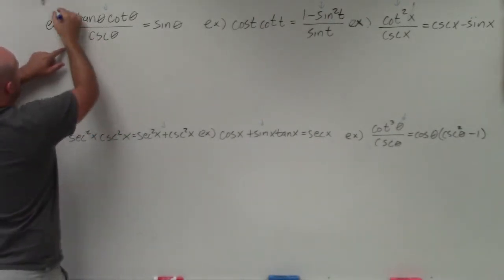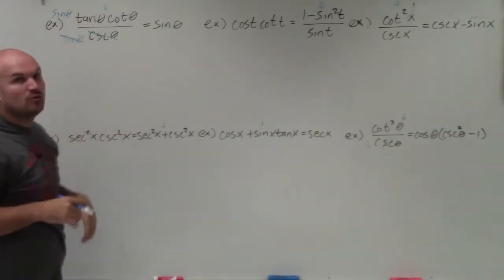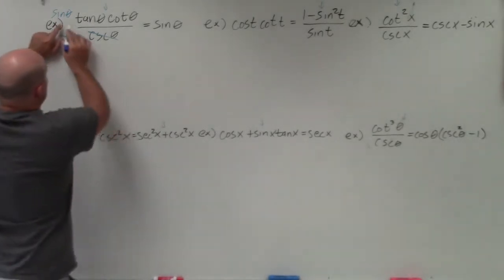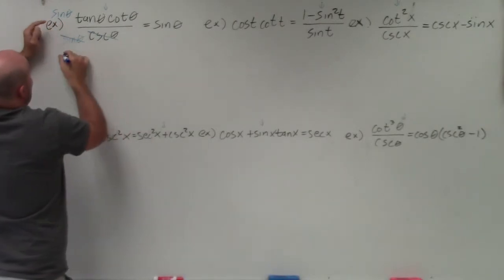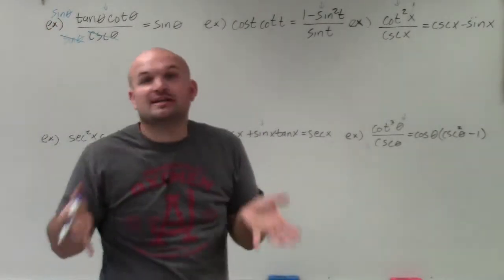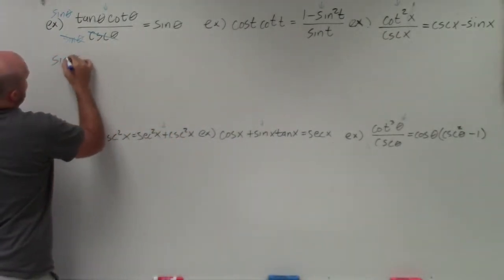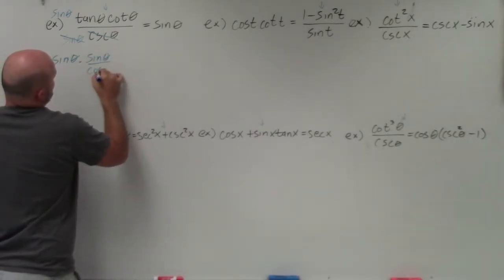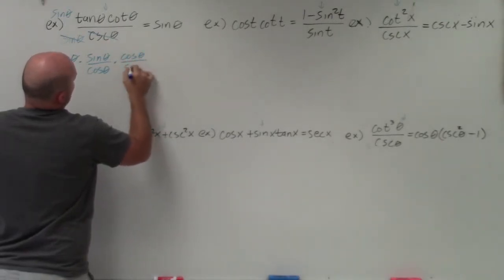So if I multiply by sine of theta on the top and on the bottom, sine of theta times cosecant of theta is going to equal 1 because they're reciprocal functions. Now I'm left with sine of theta times tangent theta times cotangent theta, and I want to show that equals 1. The best way to do that is to rewrite everything in terms of sines and cosines. So I have sine of theta times sine of theta over cosine of theta times cosine of theta over sine of theta.